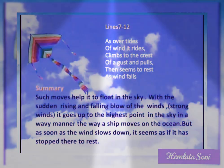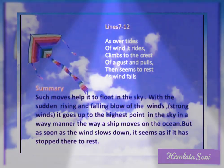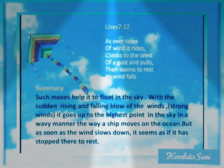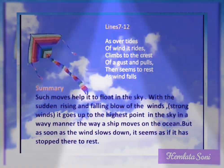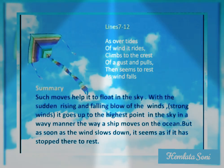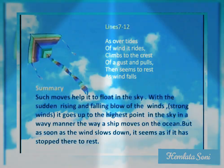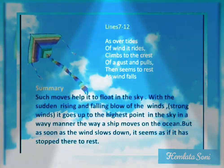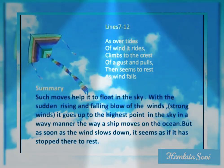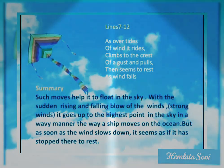Lines 7 to 12: As over tides of wind it rides, climbs to the crest of a gust and pulls, then seems to rest as wind falls. Such moves help it to float in the sky with the sudden rising and falling blow of the winds. It goes up to the highest point in the sky in a wavy manner, the way a ship moves on the ocean, but as soon as the wind slows down it seems as if it has stopped there to rest.